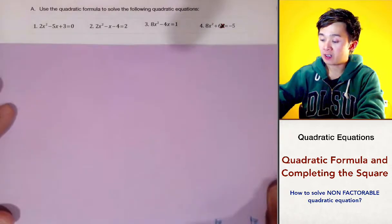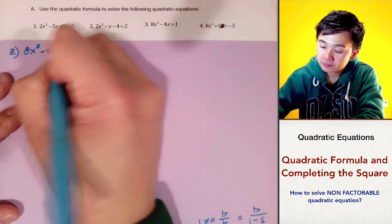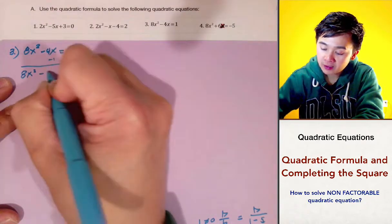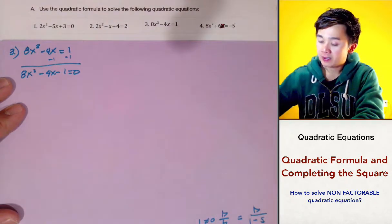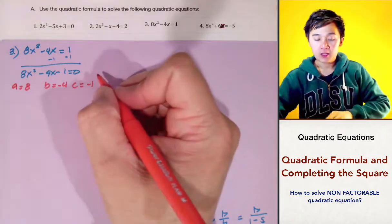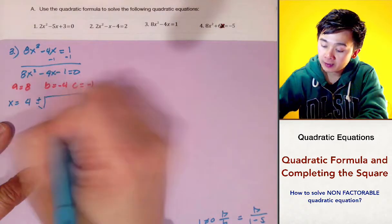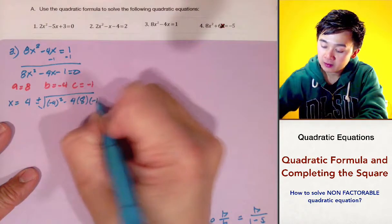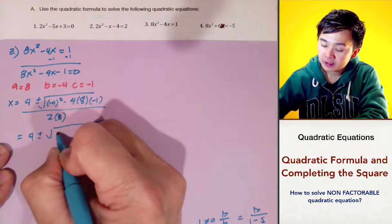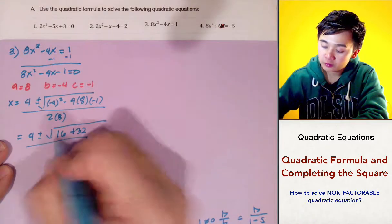Now let's answer the last two problems. For number 3, we have 8x squared minus 4x equal to 1. By equating this to 0, we subtract 1 on both sides, leaving us with 8x squared minus 4x minus 1 equal to 0. We're ready to use the formula where a is 8, b is negative 4, and c is negative 1. Using the quadratic formula, x equals the opposite of b, positive 4, plus or minus the square root of b squared minus 4ac all over 2a. So we have 4, 16, two negatives make positive, and 4 times 8 is 32 all over 2 times 8 which is 16.